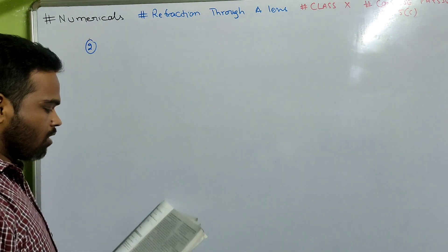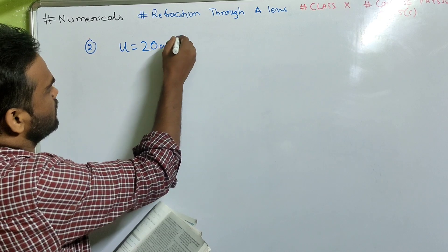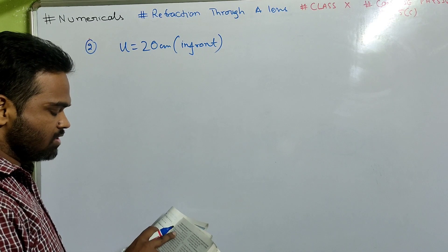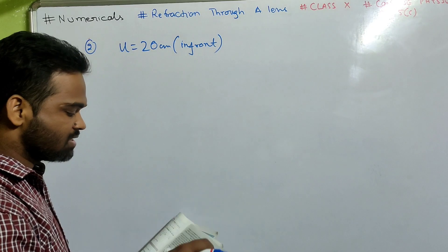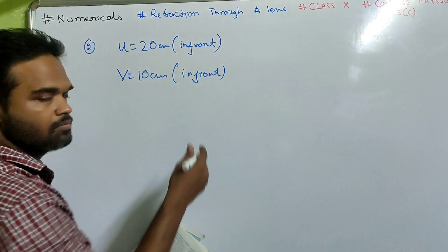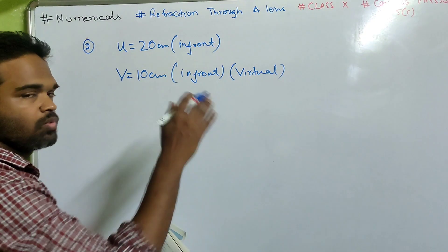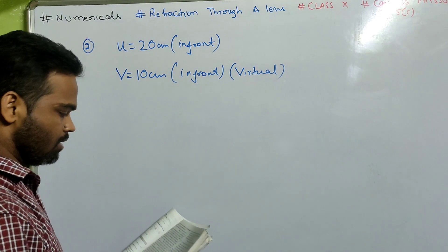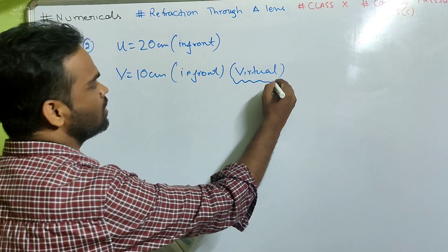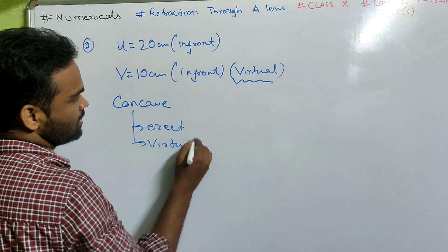Number 2: A concave lens forms the image of an object kept at a distance of 20 cm in front of it. So U is minus 20 cm (in front, negative). At a distance of 10 cm on the side of the object — so V is minus 10 cm, also in front (virtual image). The image is in front of the lens, so it is virtual. Since it is a concave lens, the image is erect and virtual.